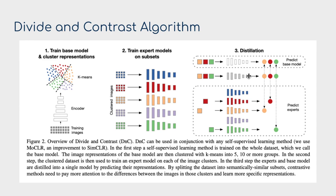Since we don't want 100 different expert models, we distill everything into a single model. The knowledge distillation task uses a regression loss to predict the representations of images produced by the expert models. For example, if an image belongs to the orange cluster, the distillation model predicts the orange expert's representation using a regression loss—a three-stage pipeline producing our final unified representation.